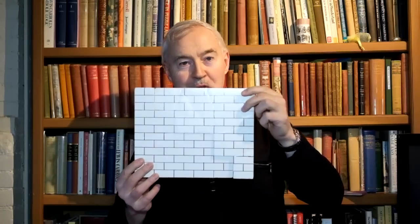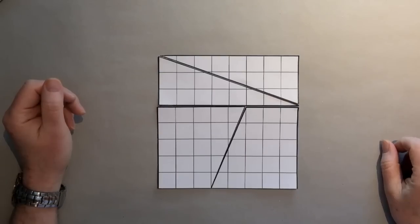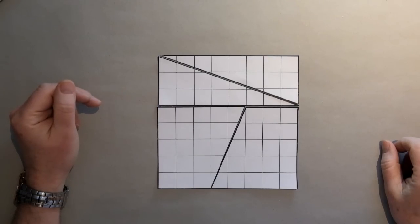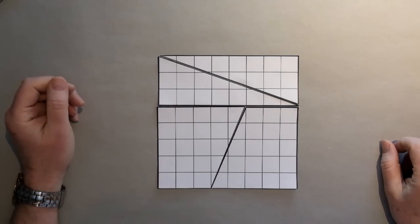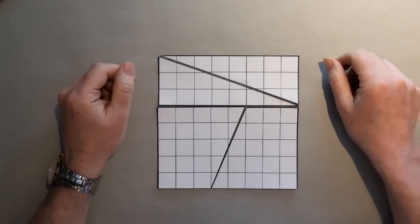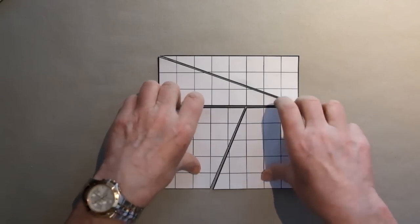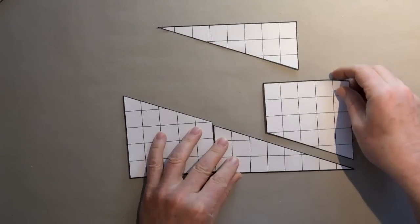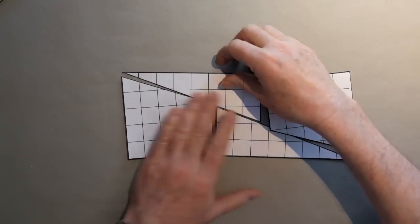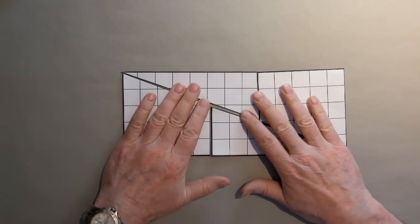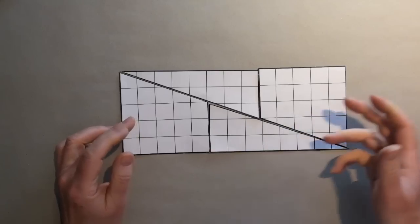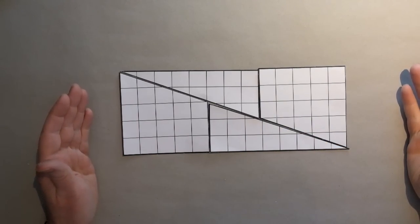Let's take a look at some other geometric vanishes. Here's a classic — this goes back quite a ways. In fact, there's a drawing of this in Lewis Carroll's papers from the 19th century because he was very interested in geometric vanishes as well as all kinds of puzzles and games. This is an eight by eight square cut into four pieces. We're going to rearrange the pieces by rotating two of them and form a rectangle. The rectangle is 13 by five squares, which equals 65 squares — we seem to have gained one square because the original square was eight by eight, which was 64.